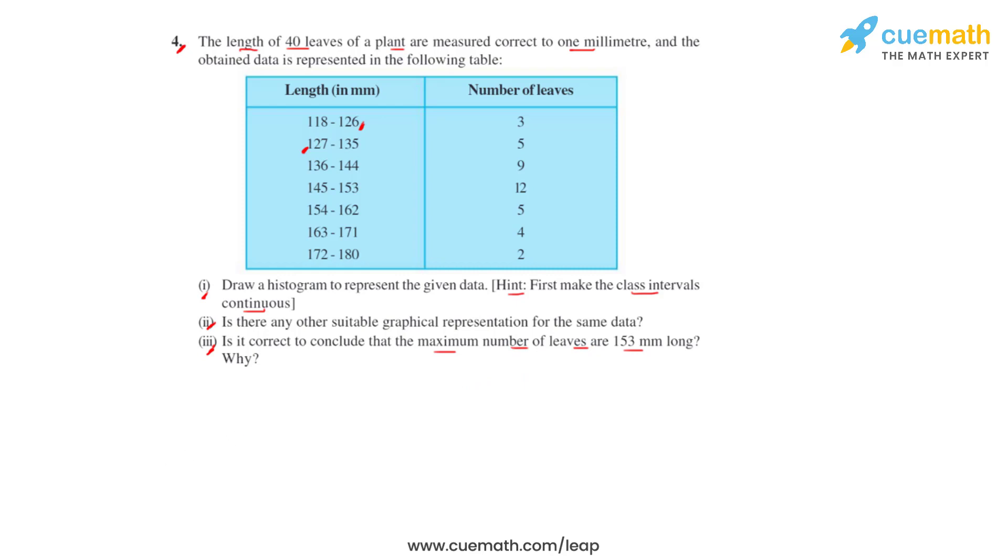We start solving this problem by first making the class intervals continuous. To make the classes continuous we will have to find the difference between the upper limit of a class and the lower limit of the succeeding class. So we take this as our first class for which the upper limit is 126 and this is our succeeding class for which the lower limit is 127. So let's find the difference: lower limit minus upper limit which is 127 minus 126, we get the difference as 1.